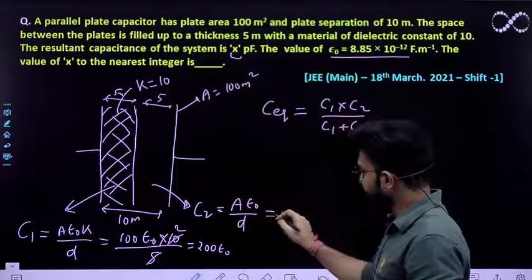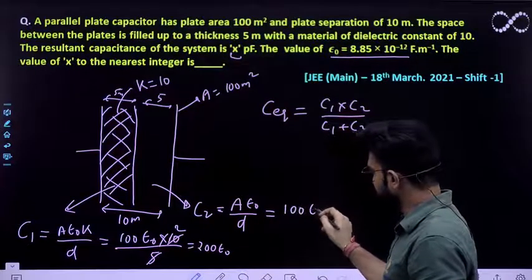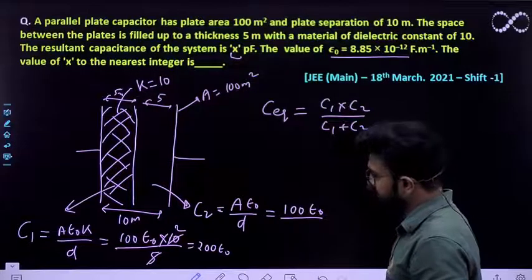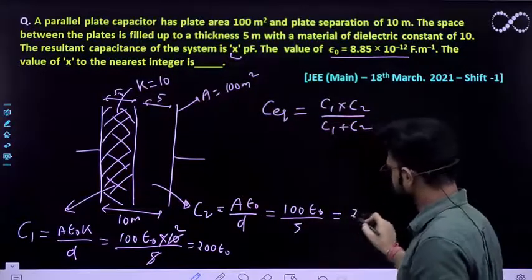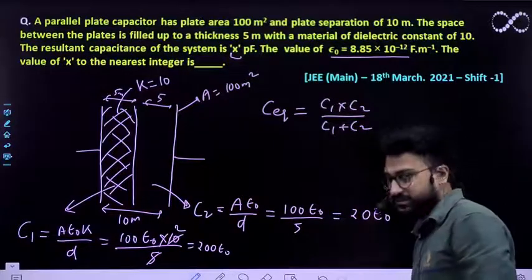What about c2? Which is 100 epsilon naught by d. d kitna hai? 5. Toh we'll be getting as 5 to the 10, so 20 epsilon naught. This is it.